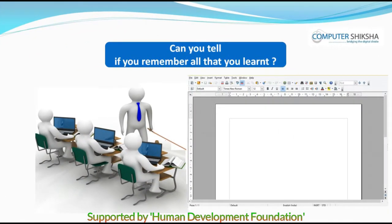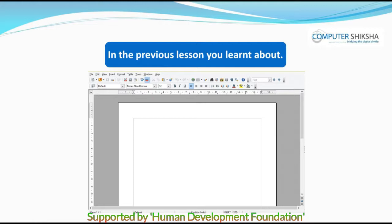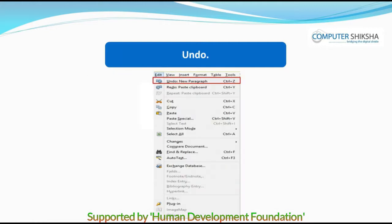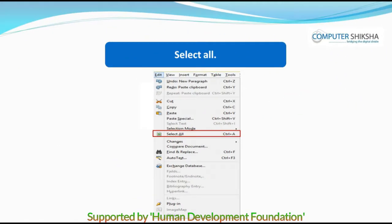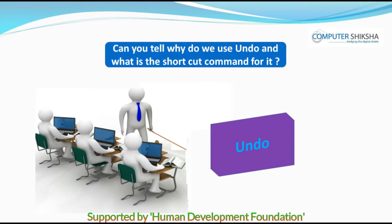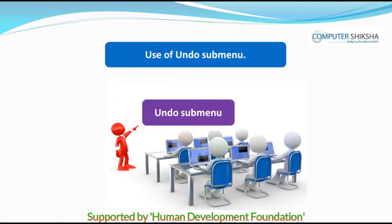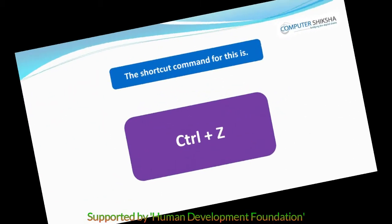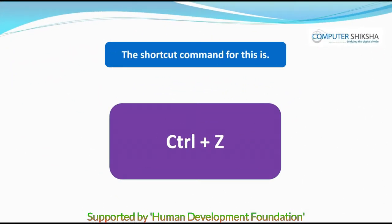Can you tell if you remember all that you learnt? In the previous class, you learnt about Undo, Redo, Cut, Paste, Select All and Find and Replace. Can you tell why do we use Undo and what is the shortcut command for it? We use Undo to remove any word or other work in which we have made some mistake. The shortcut command for this is Control plus Z.